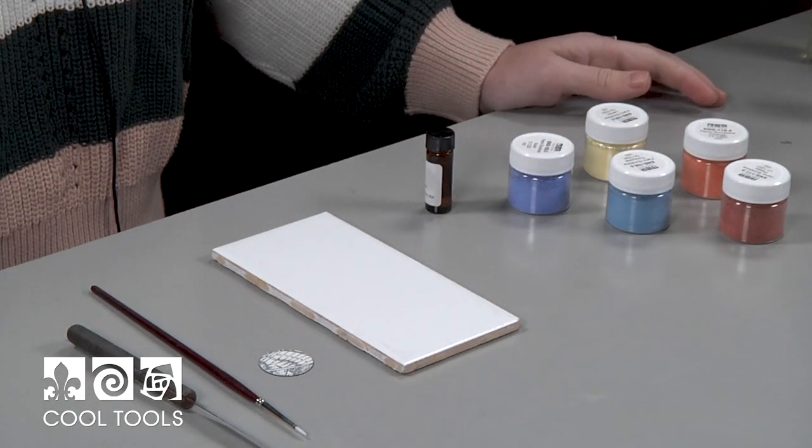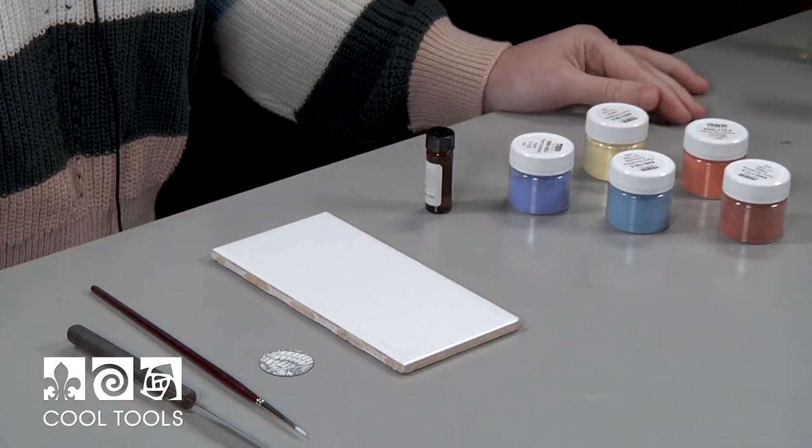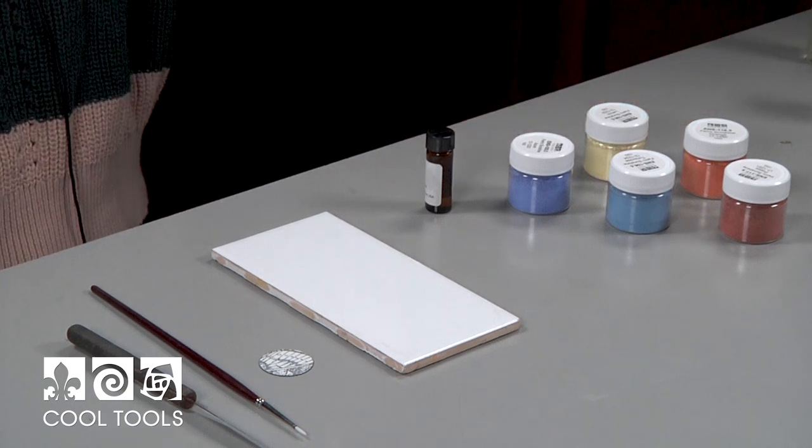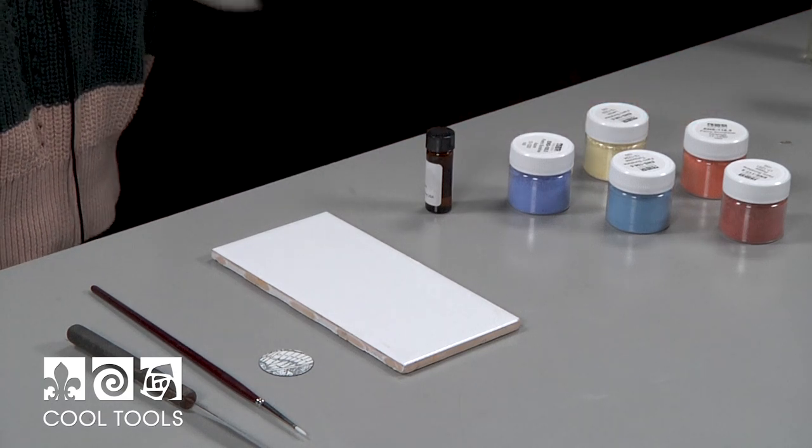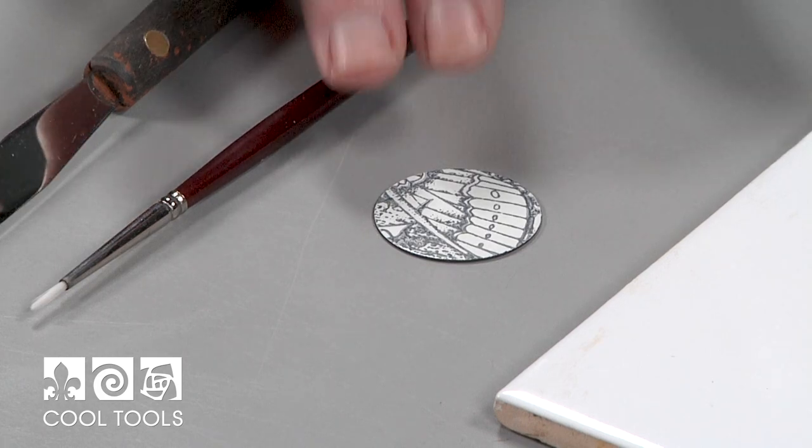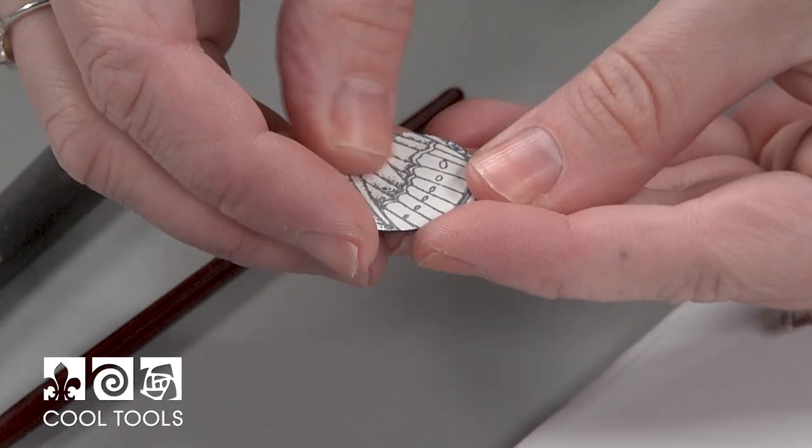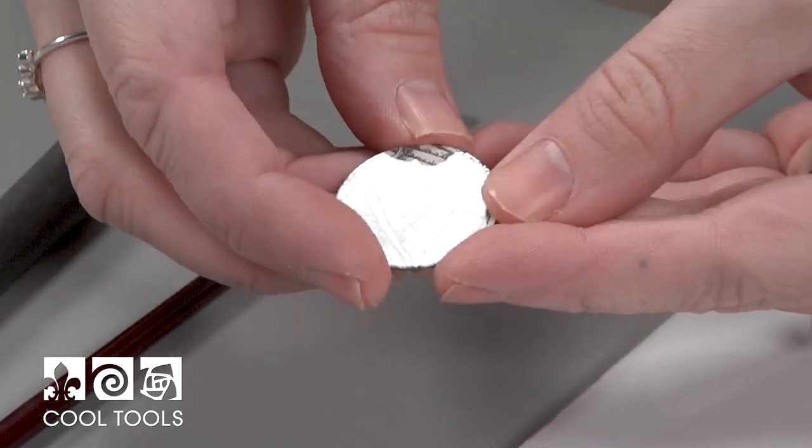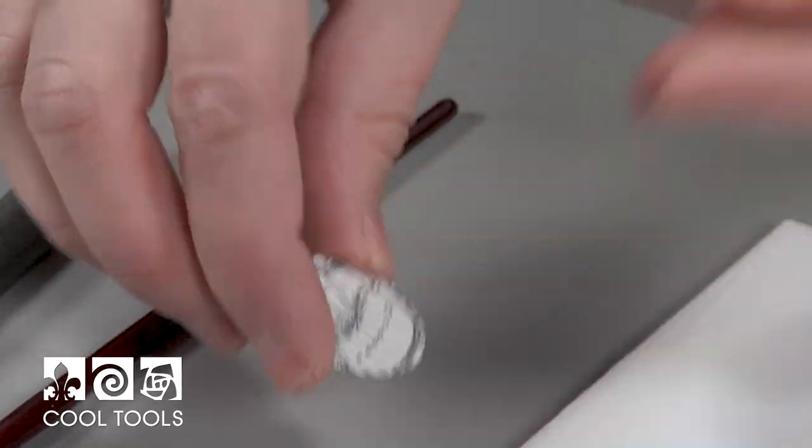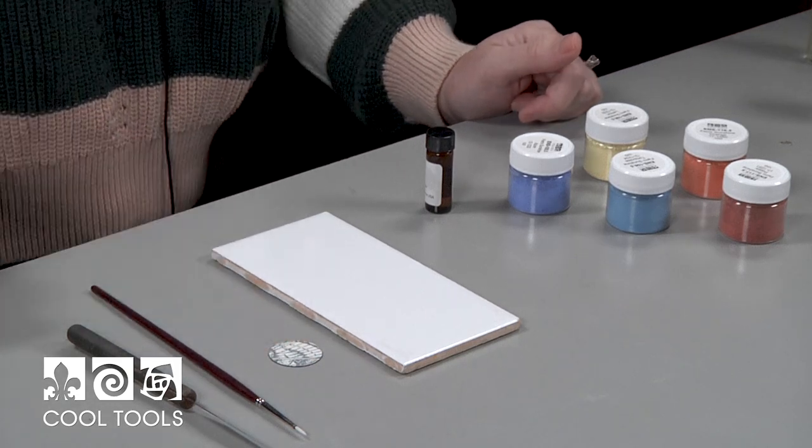While you're waiting for your piece to cool down from firing, now's a good time to clean your brush and stamp if you haven't already done so. Just some dish soap and water will clean them up well. I have my fired piece, and you can tell the fine line black is fired in when it feels nice and smooth and it's a glossy surface instead of matte.